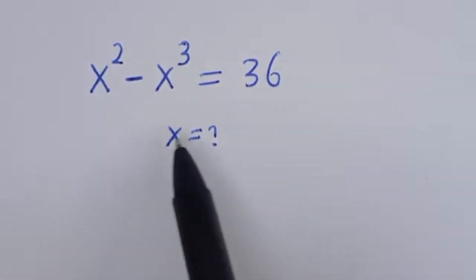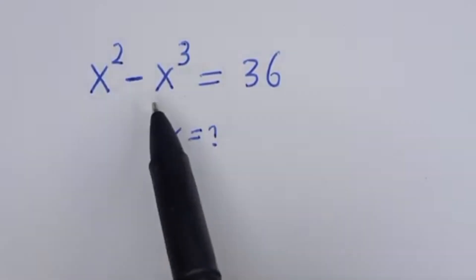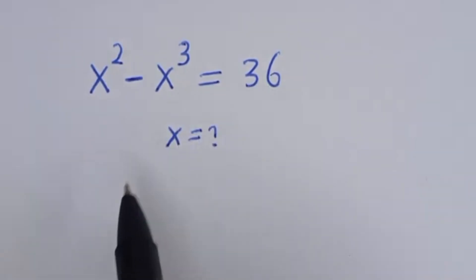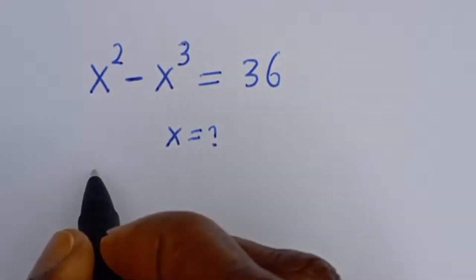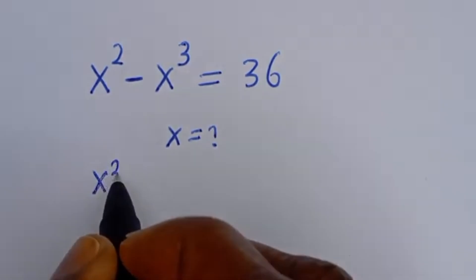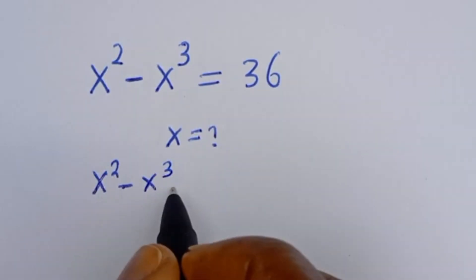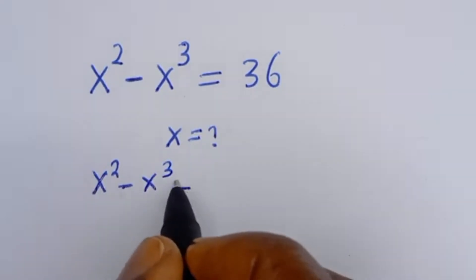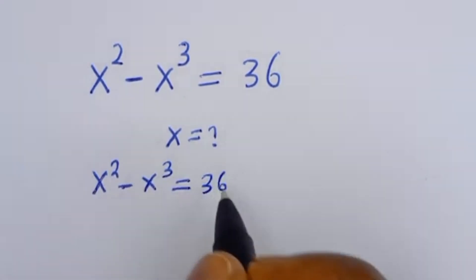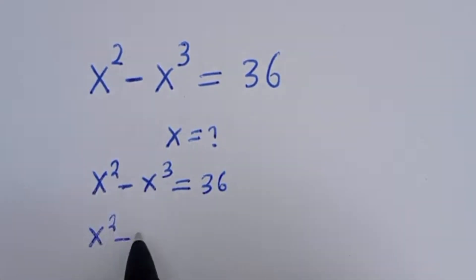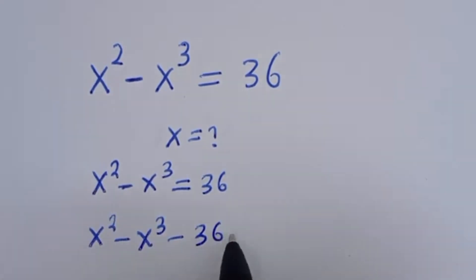Hello. How to solve for S in this equation: S squared minus S to the power of 3 is equal to 36. Rearranging, S squared minus S to the power of 3 minus 36 is equal to 0.